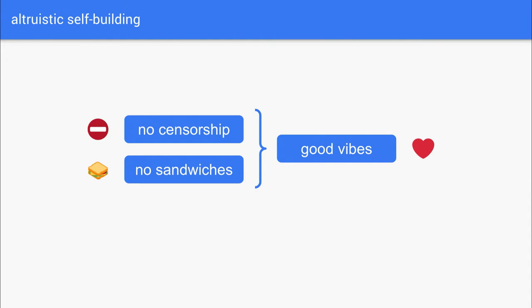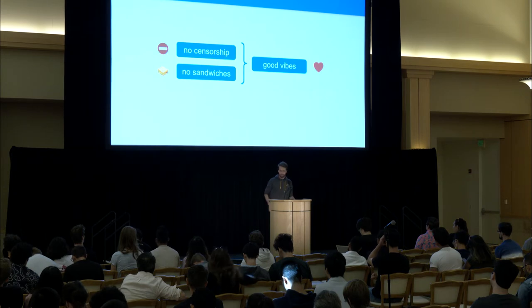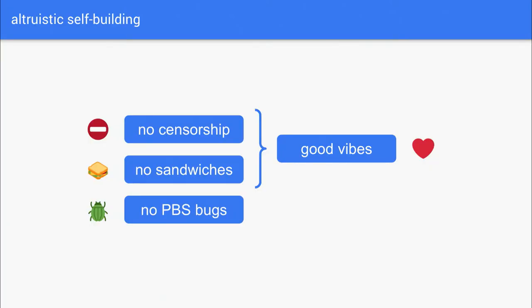This is where the word 'altruistic' comes in — you're making a financial sacrifice, reducing income as a validator, maybe losing 1% APR, going from 6% to 5%. But ironically this might be rational: if many people are spreading these good vibes by self-building, the value of your 32 ETH stake might go up, so you sacrifice a little income but potentially increase the monetary premium of the asset you're staking with. Another rational reason to self-build is avoiding bugs in the PBS infrastructure if you're not running MevBoost.